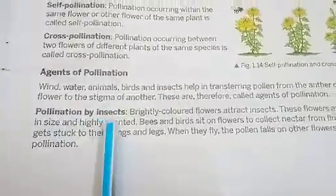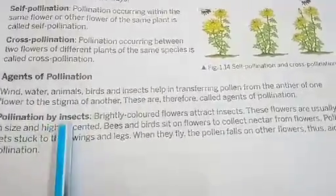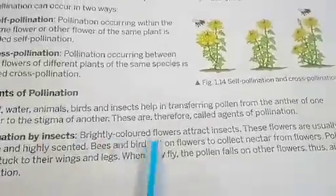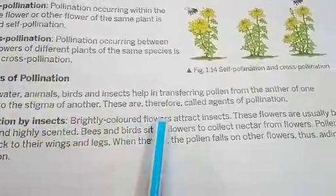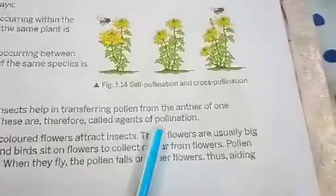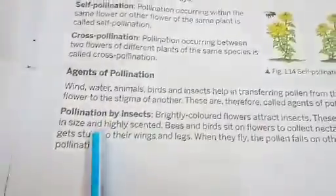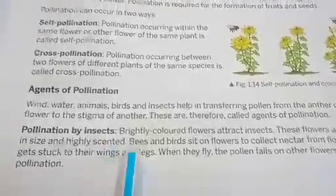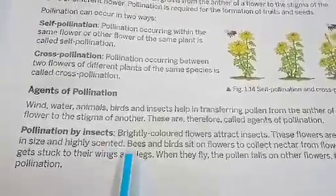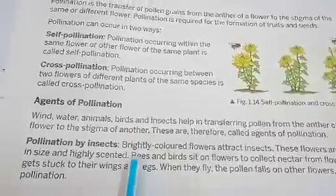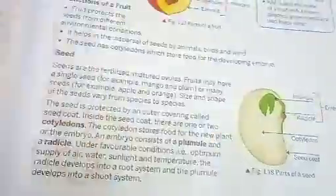First: pollination by insects. For pollination by insects, the flower has to be brightly colored to attract the insects. They are also big in size and highly scented. By this the insects are attracted, and when they come and sit on the flower to suck the nectar, they carry the pollen grains and take them to the female flower.